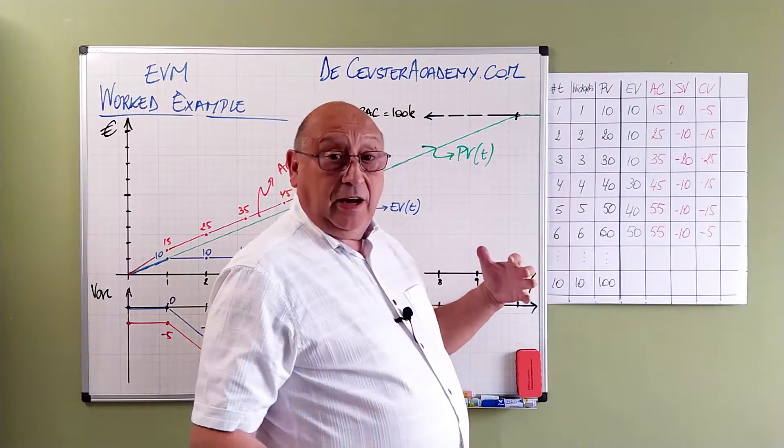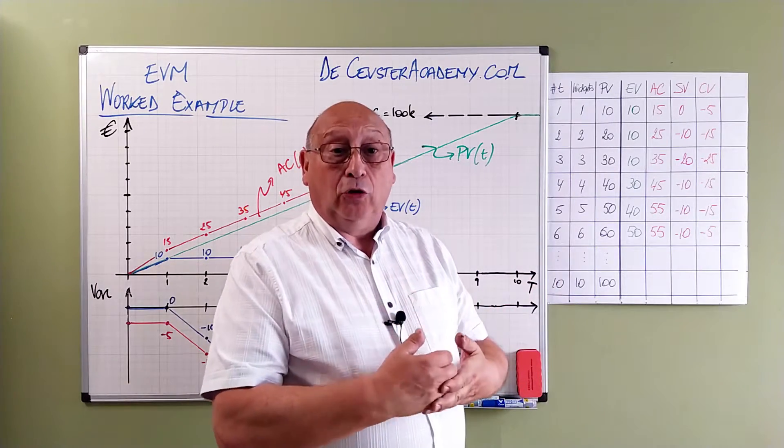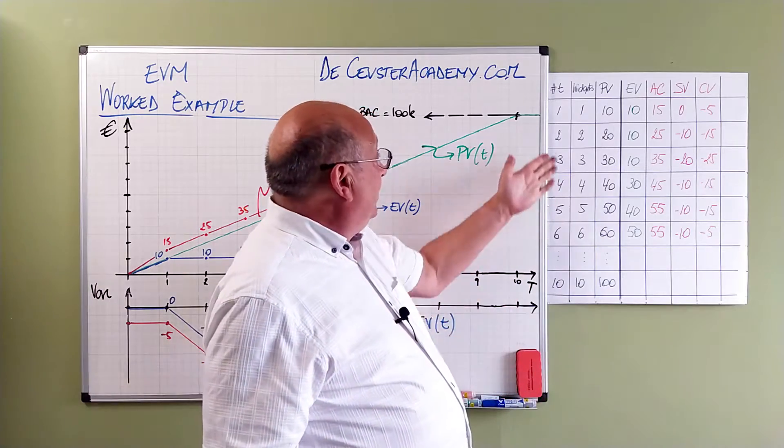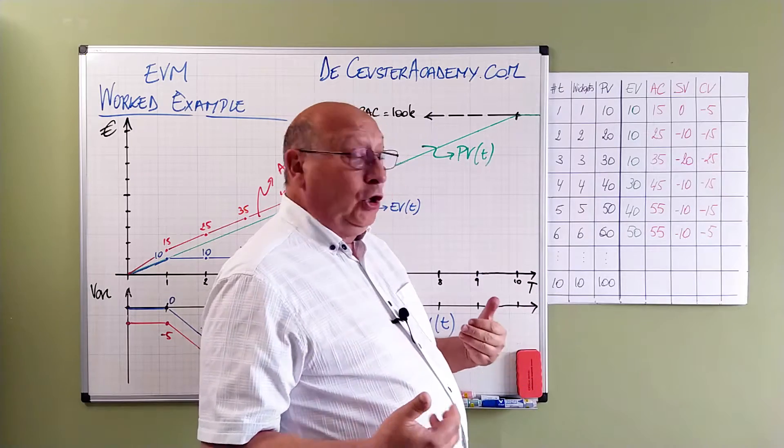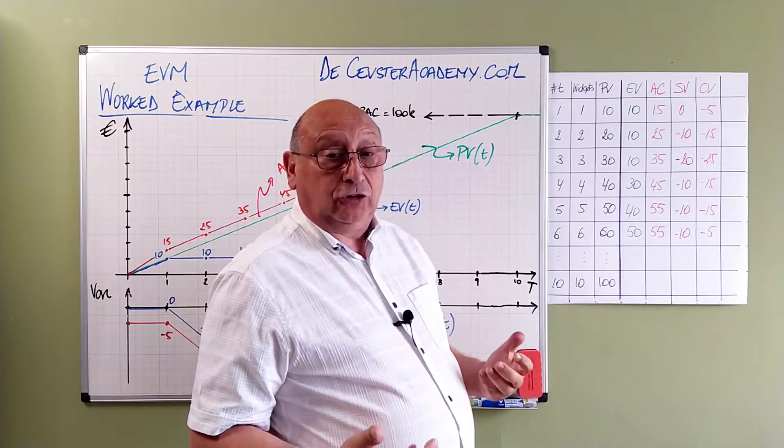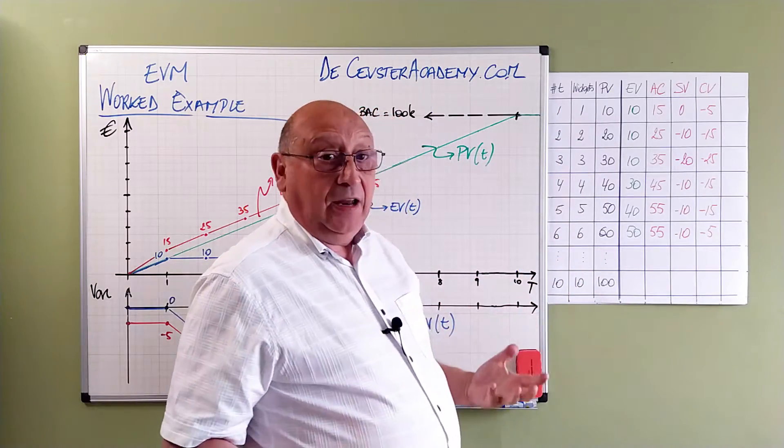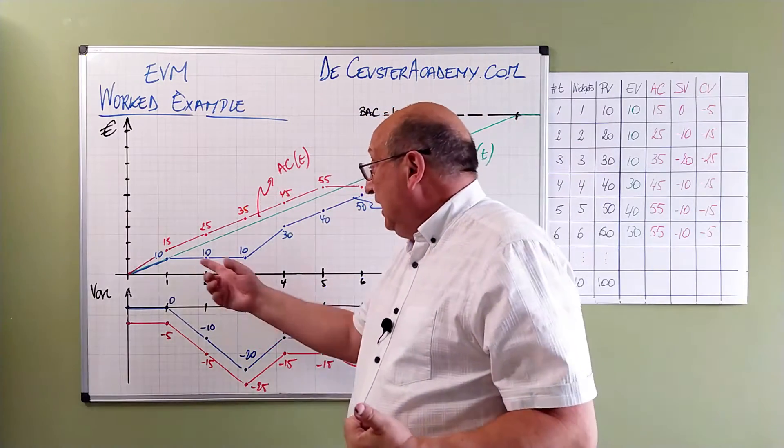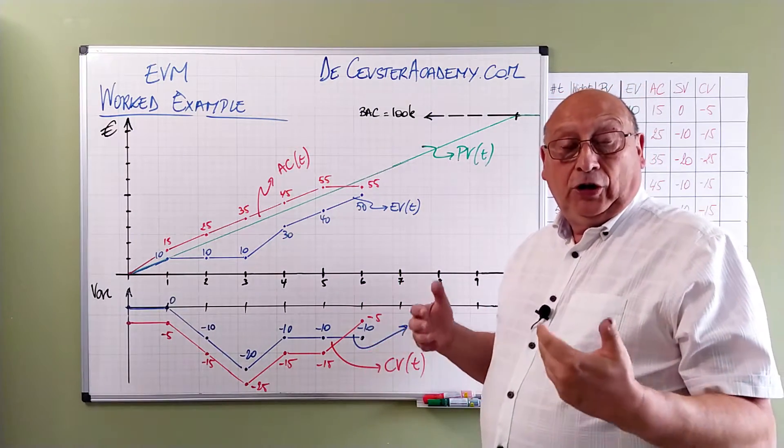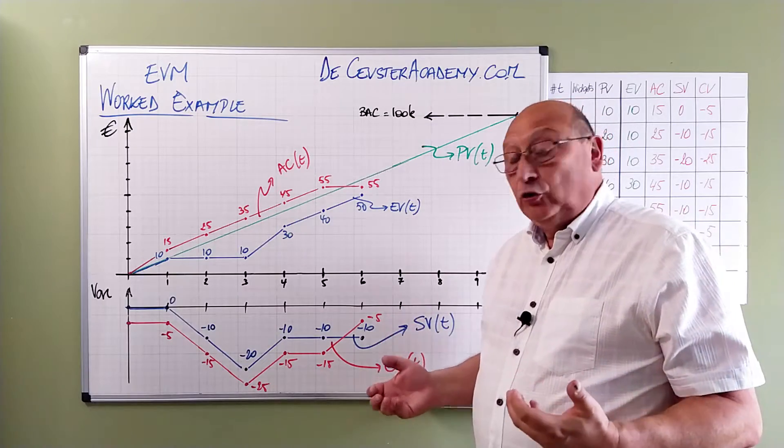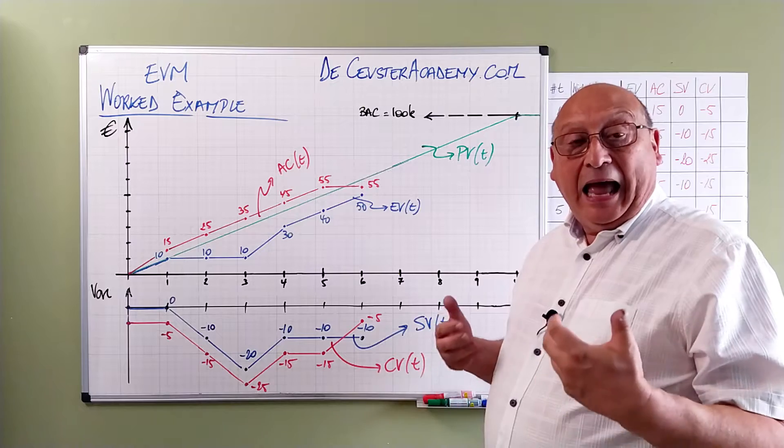In the table here I have summarized the values that we had in the table on the whiteboard before. We still have the duration, the number of widgets we expect to produce at a certain time. The planned value from it and I put that information in the green line on this graph. So we see that we have the planned value overview from zero up to 100k which is the budget at completion.